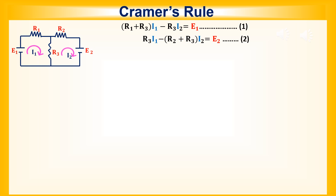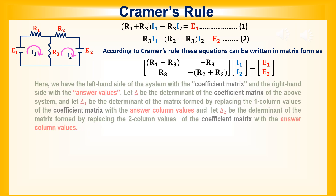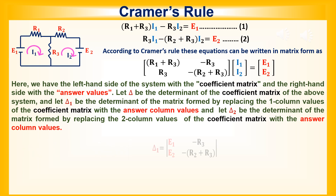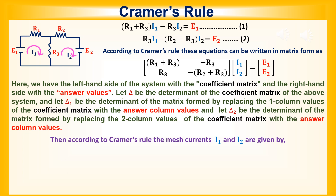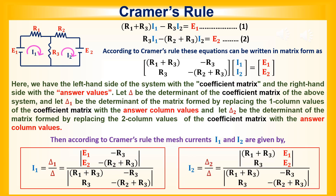According to Cramer's rule, these equations can be written in matrix form, with the coefficient matrix on the left-hand side and the answer values on the right-hand side. Let delta be the determinant of the coefficient matrix, delta 1 be the determinant of the matrix formed by replacing the first column of the coefficient matrix with the answer column values, and delta 2 similarly for the second column. Then the mesh currents are given by I1 equals delta 1 divided by delta, and I2 equals delta 2 divided by delta.